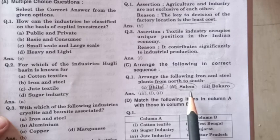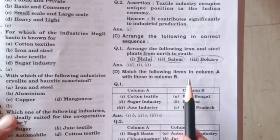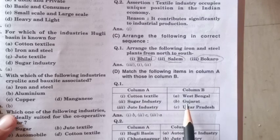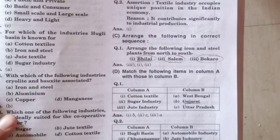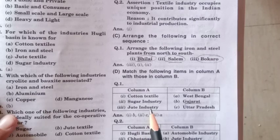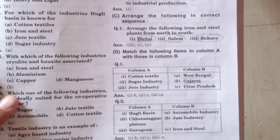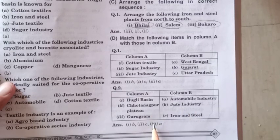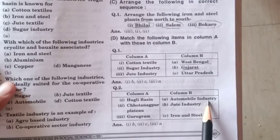Next, match column A with column B. Cotton textile is matched with Gujarat, because cotton grows most in Gujarat as it is covered by black soil. Second is the sugar industry, which is matched with Uttar Pradesh, and jute industry is connected with West Bengal. Hooghly basin is connected with jute industry, Chota Nagpur Plateau is associated with iron and steel plants where iron is found, and Gurugram is matched with the automobile industry.